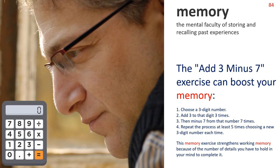Memory — the mental faculty of storing and recalling past experiences. The add-3-minus-7 exercise can boost your memory. Choose a 3-digit number, add 3 to that digit 3 times, then minus 7 from that number 7 times. Repeat the process at least 5 times, choosing a new 3-digit number each time. This memory exercise strengthens working memory because of the number of details you have to hold in your mind to complete it.